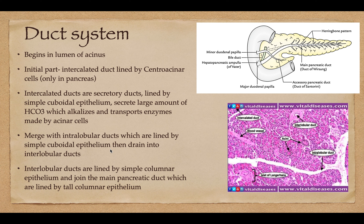The intercalated ducts merge into the intralobular ducts, also lined by simple cuboidal epithelium, and those drain into the interlobular ducts. The interlobular ducts are lined by simple columnar epithelium instead, and they join the main pancreatic duct, which is lined by tall columnar epithelium — it just gets taller because it has to drain more fluid, so the cells need to be more robust. It drains into the duodenum in a herringbone pattern. There is a main duct, the duct of Wirsung, which has the tall columnar epithelium. Then it goes into the hepatopancreatic ampulla of Vater, and there's also the bile duct — sometimes there's an anastomosis, but usually there isn't.